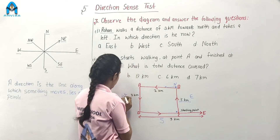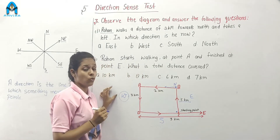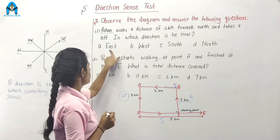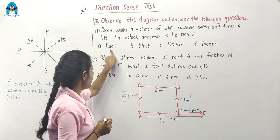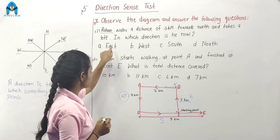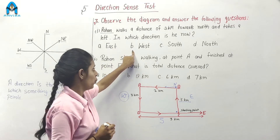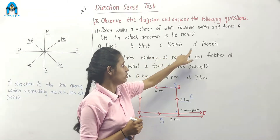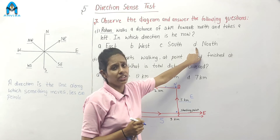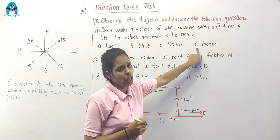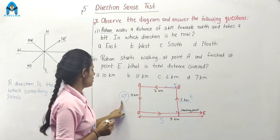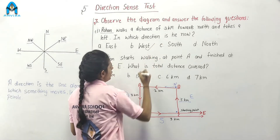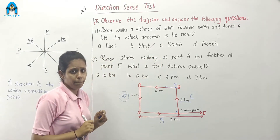Now, if this is west, which is our correct option? Option A — east, option B — west, option C — south, option D — north. Our correct option is option B — west.